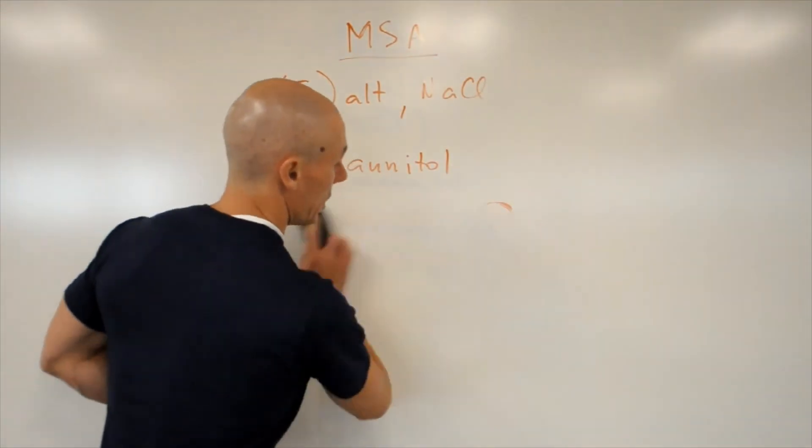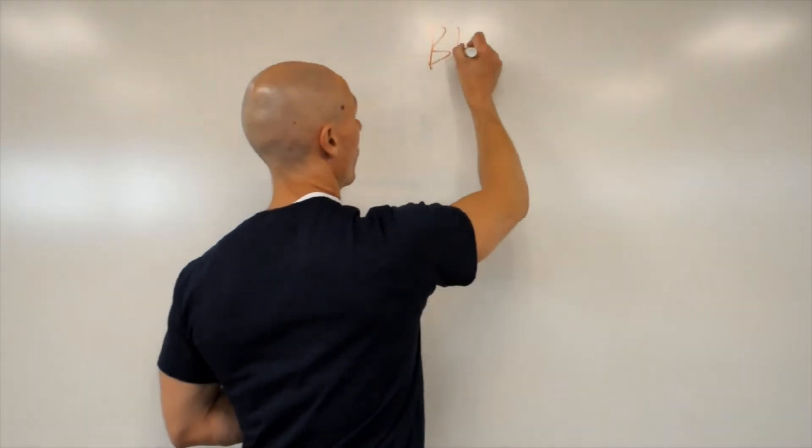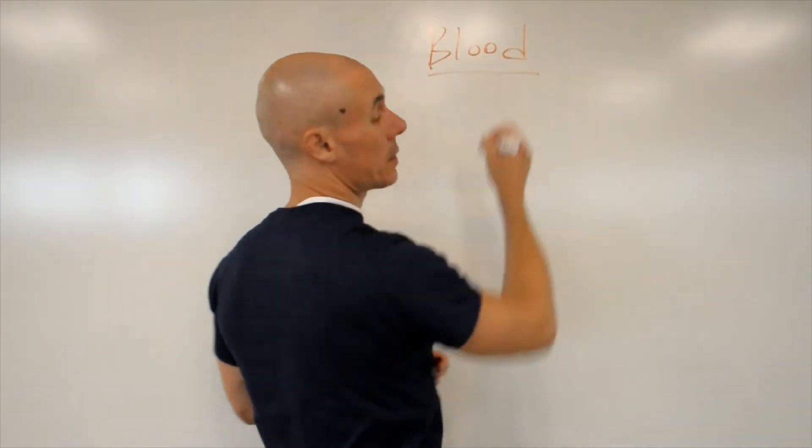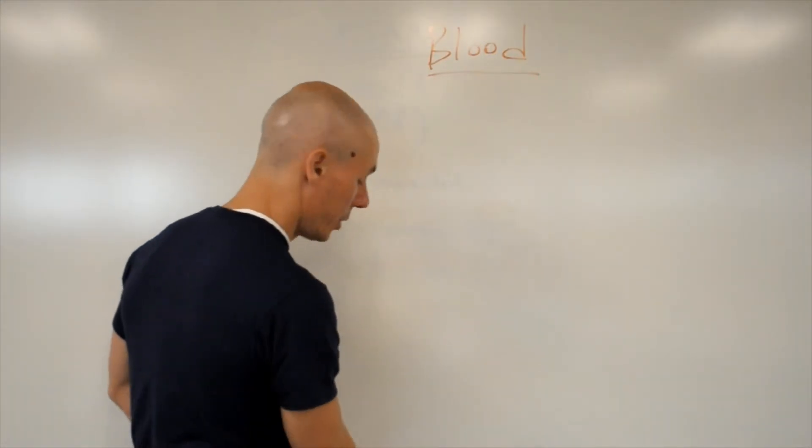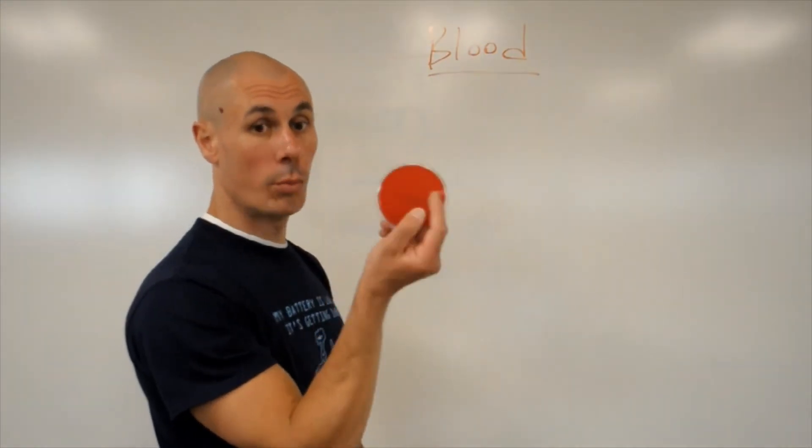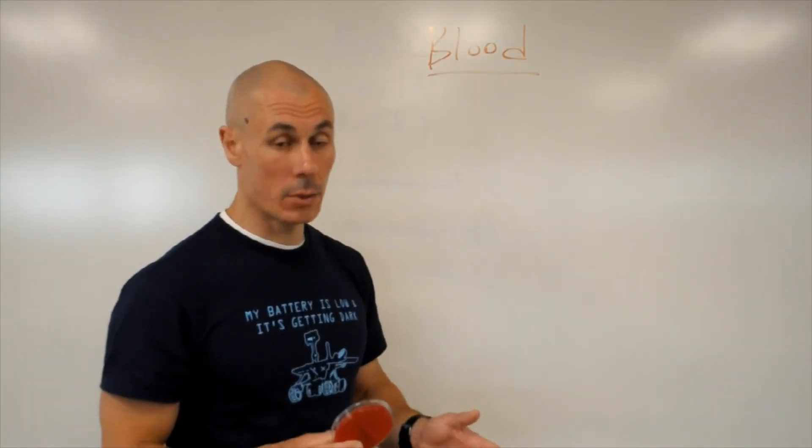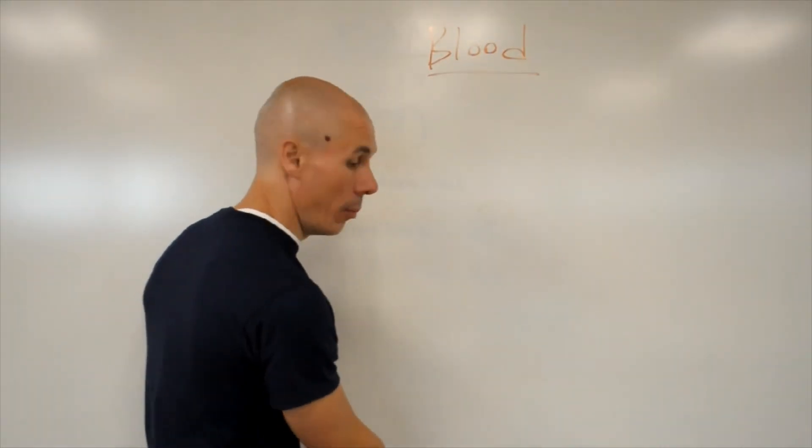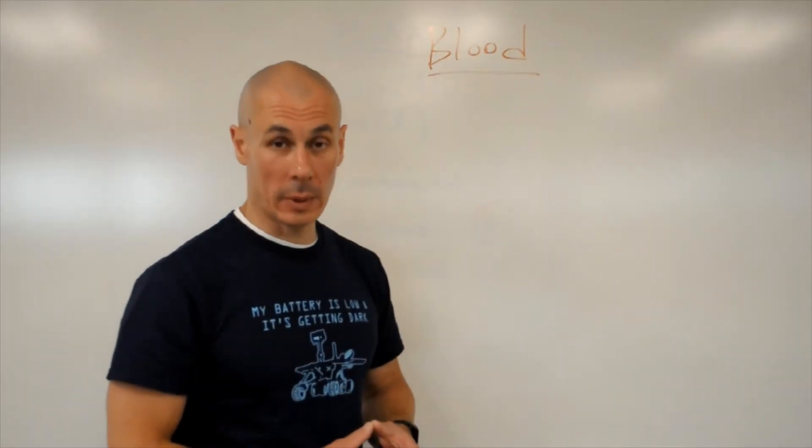Another medium that we're going to be working with is blood agar. It's the standard TSA, tryptic soy agar, which contains sheep blood. Basically, the whole blood, the whole red blood cells. And it turns out that some microorganisms can break down those red blood cells.